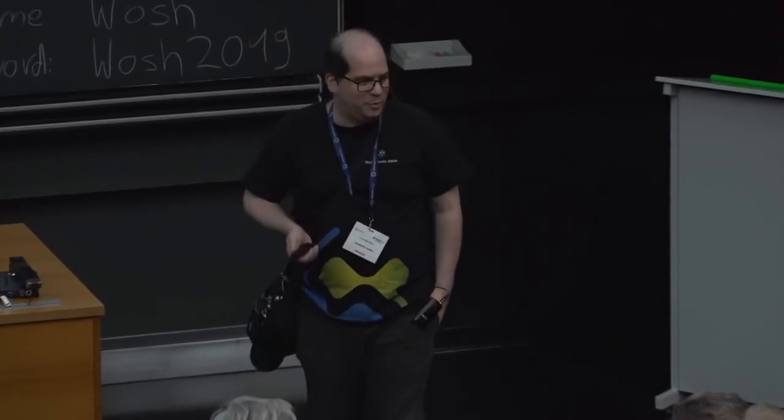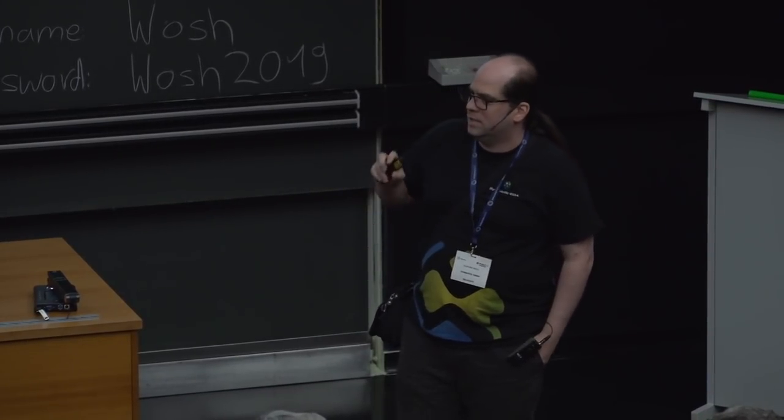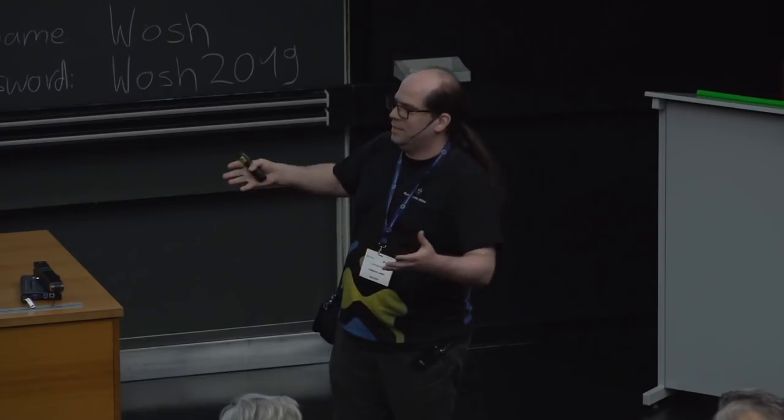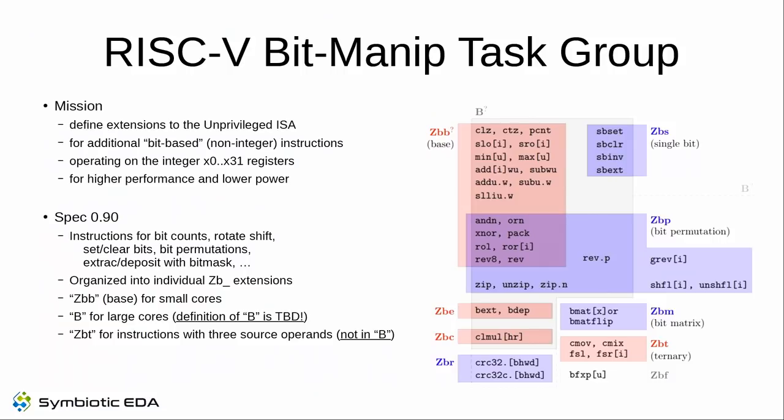The Bit Manipulation Task Group's mission is to define a set of extensions to the unprivileged RISC-V ISA that operate on the standard integer registers. We don't add any architectural state. The focus is on additional bit-based non-integer instructions that treat integer registers either as a vector of bits or something other than a regular integer. The goal, as always, is higher performance at lower power.